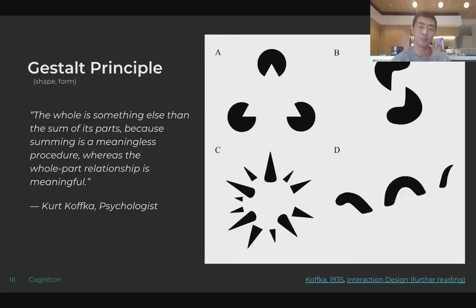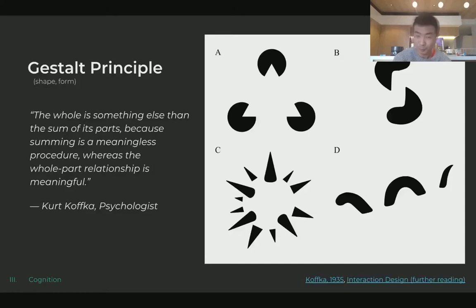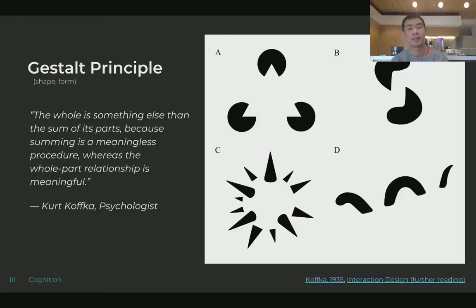For example, if you look at figure A, you might see a triangle in front of three black spheres. But if you took any piece away and just looked at one pacman shape by itself, you wouldn't see the triangle — it wouldn't be there. Our brain is really good at filling gaps, connecting invisible lines, joining perspectives, and understanding overlaps. But we also need to be aware of how people might interpret pictures differently or be misled.